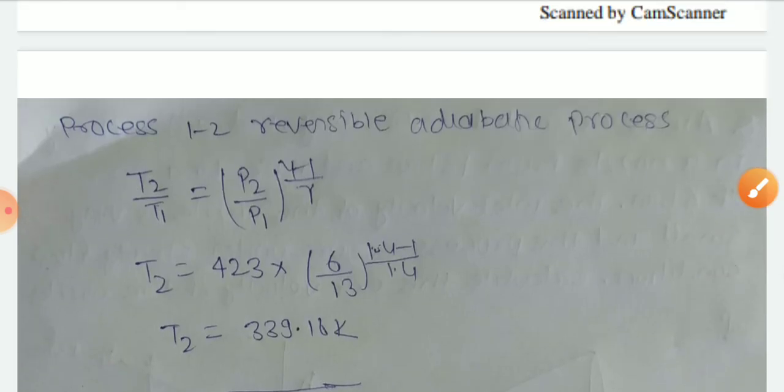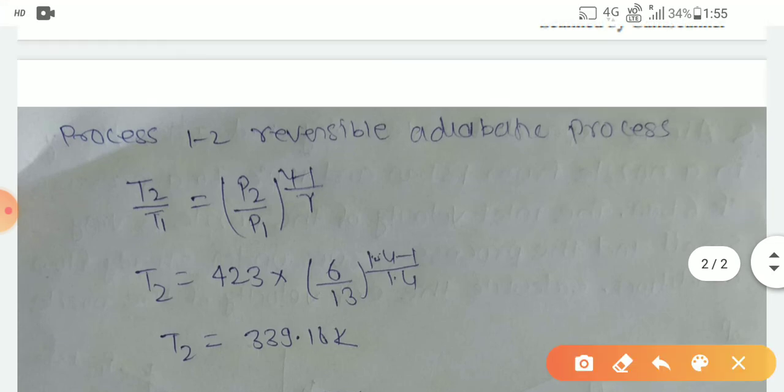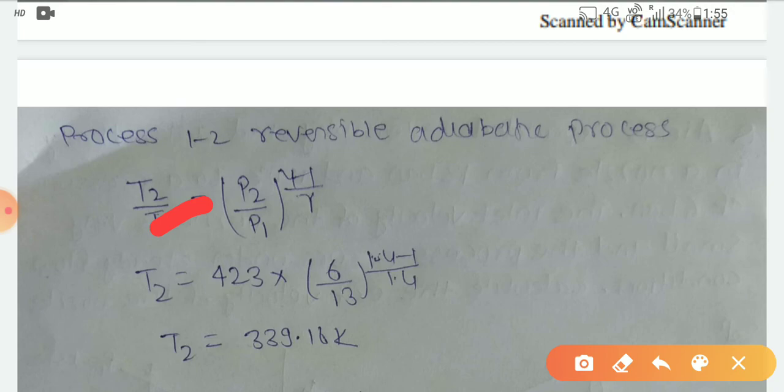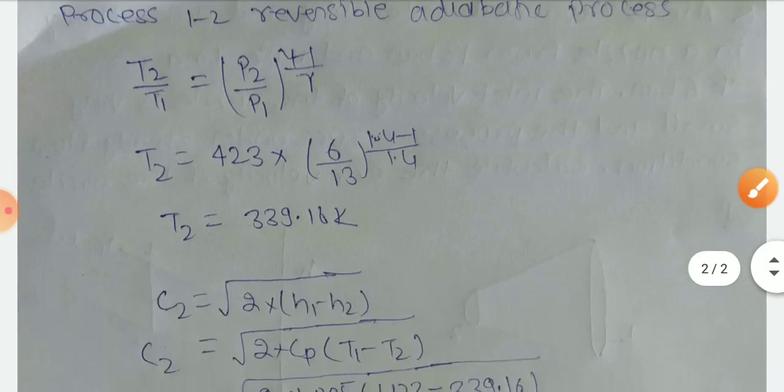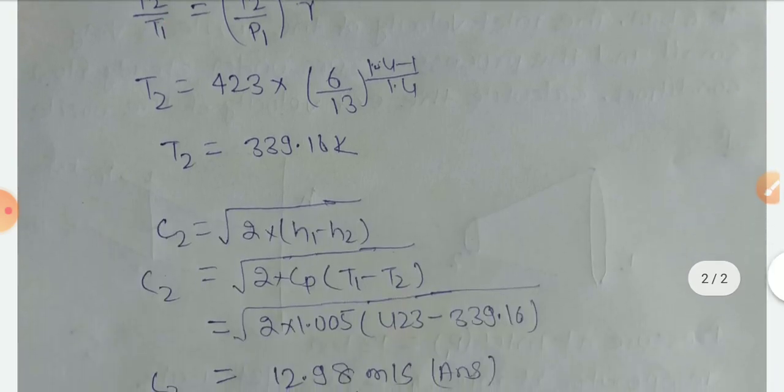Process 1 to 2 is reversible adiabatic, so you know that T2/T1 = (P2/P1)^((γ-1)/γ). T1 is given, P2 is given, P1 is given, so you can find T2 is 339.16 Kelvin.